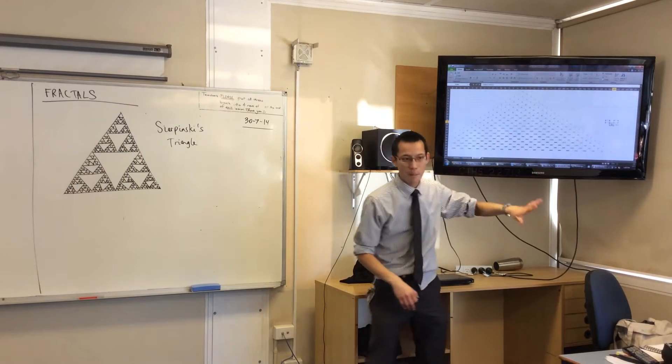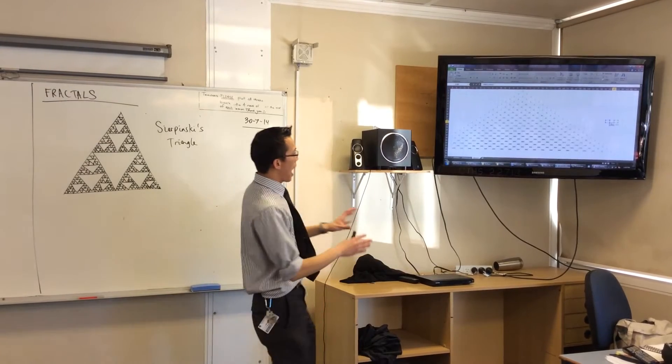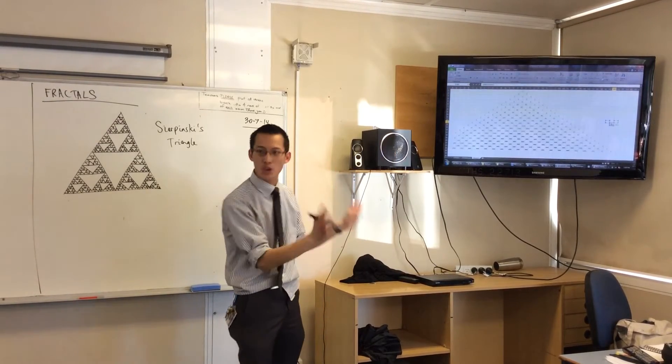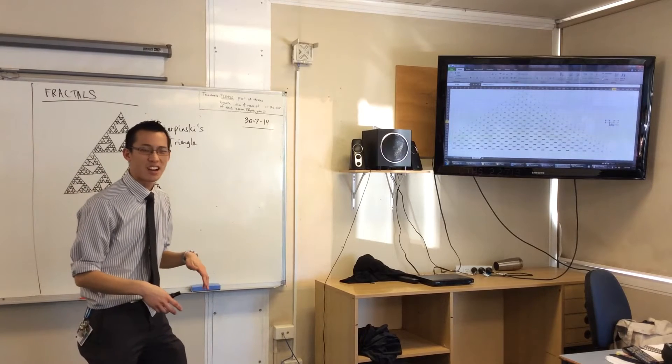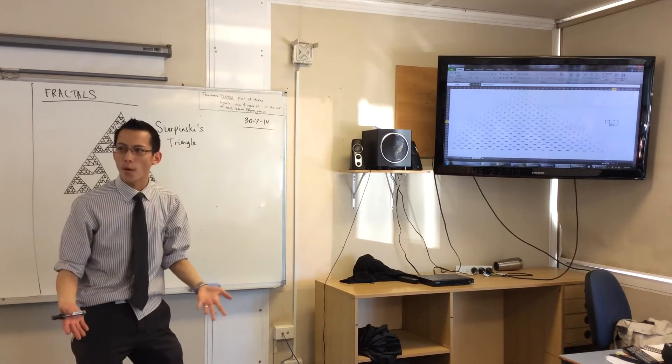There are lots of odd numbers and lots of even numbers, okay? Now, I wonder, how do you think they would be distributed through Pascal's Triangle? Will it be kind of random? Will they be in straight lines? Where are they going to be?